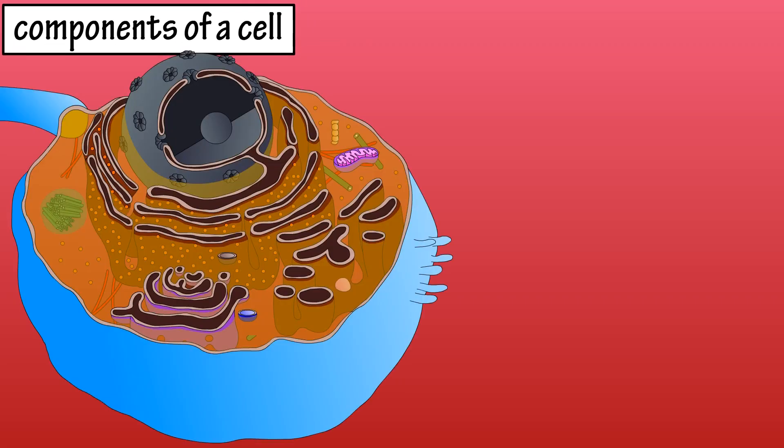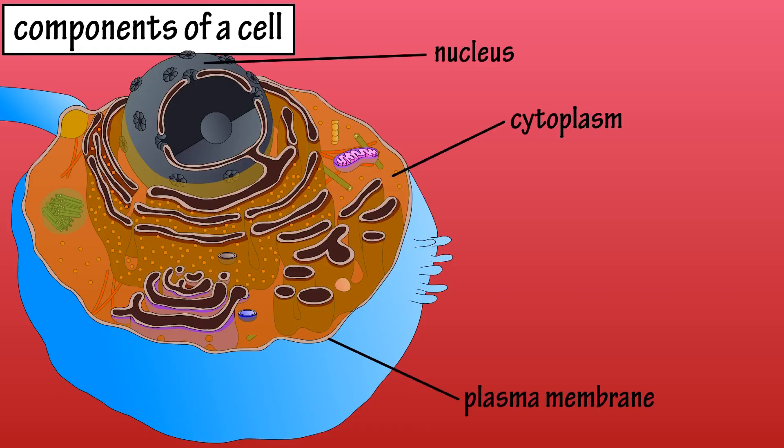The major components of a typical human cell. The main components include the plasma membrane, the cytoplasm, including the organelles and cytoskeleton, and the nucleus.